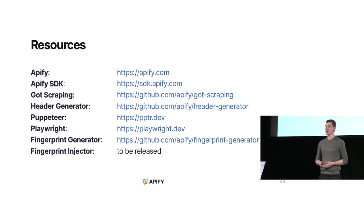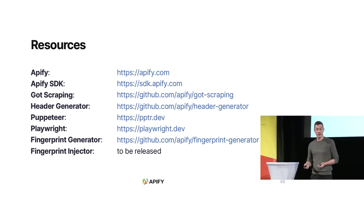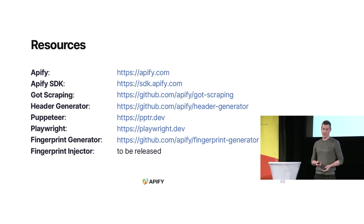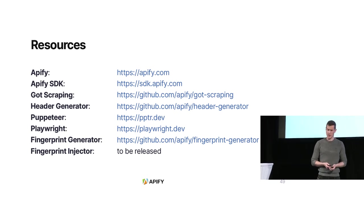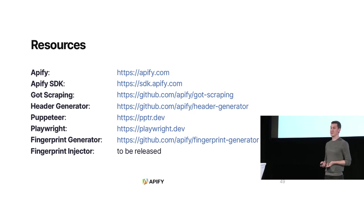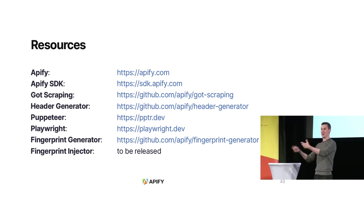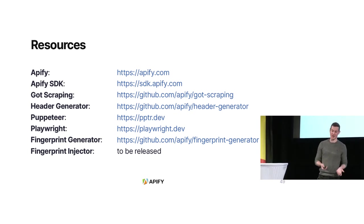Some resources: everything I showed you is open source, so you can use it in your own projects. Most of the libraries are by Apify. Puppeteer is by Google and Playwright is by Microsoft — a funny thing is that Puppeteer came first, and then Microsoft decided they wanted a similar library, so they took all the developers from Google and started Playwright with them. And that's it. I hope it helped. Thank you for listening.